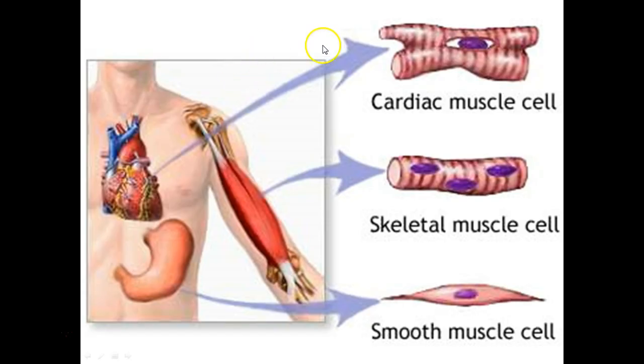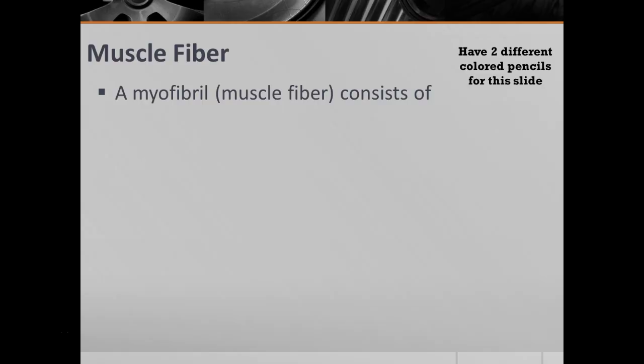Here you can kind of see the cardiac muscle, and you can see the very different appearances from either cardiac, skeletal, or smooth muscle cells. Those are the three kinds of muscles you have throughout your body.